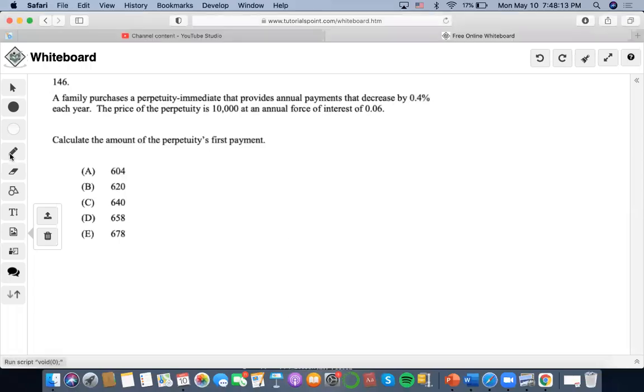Okay, so for this problem, it says that family purchase a perpetuity-immediate that provides annual payments that decrease by 0.4%. Okay, so payments are decreasing. So we need to find the decreasing rate.